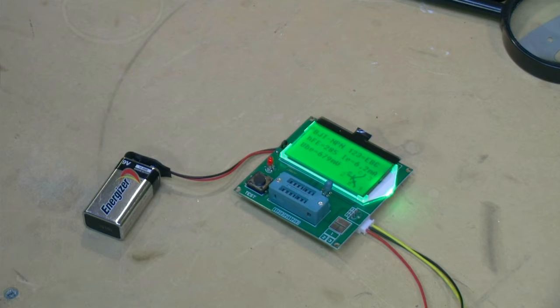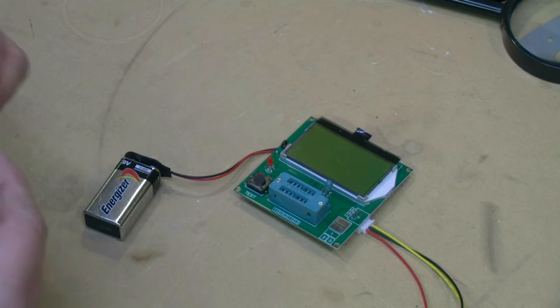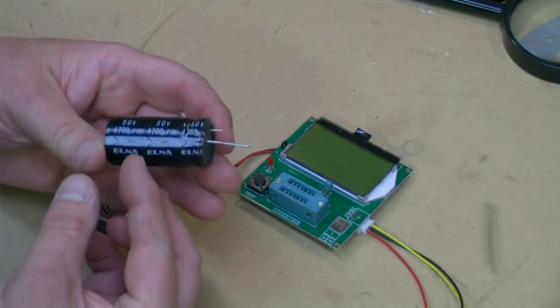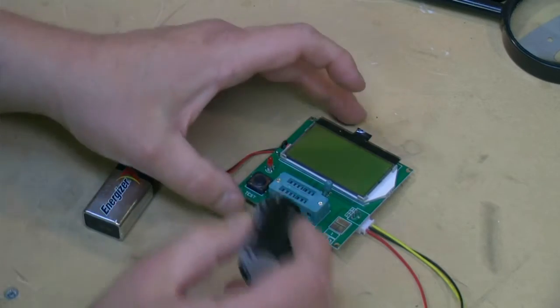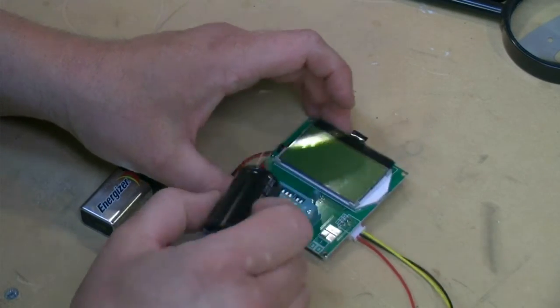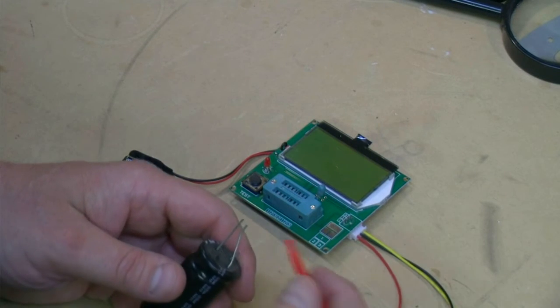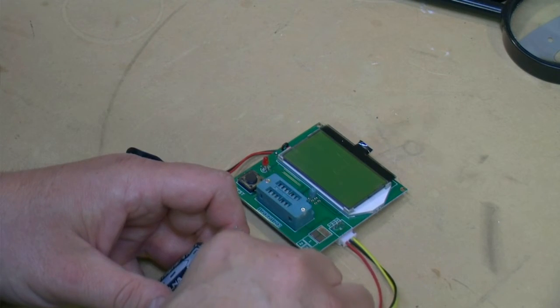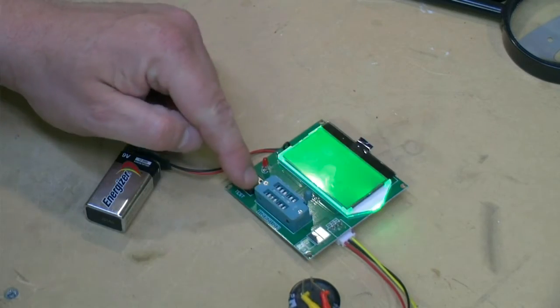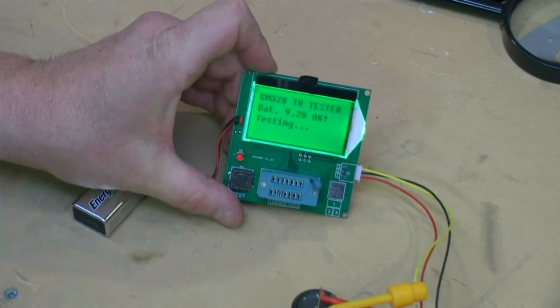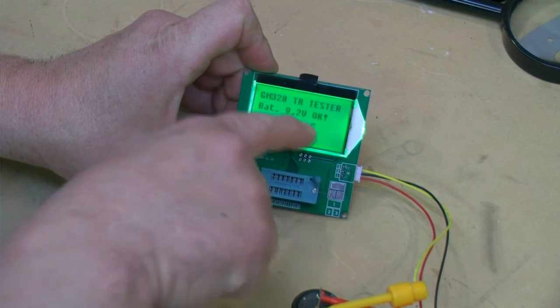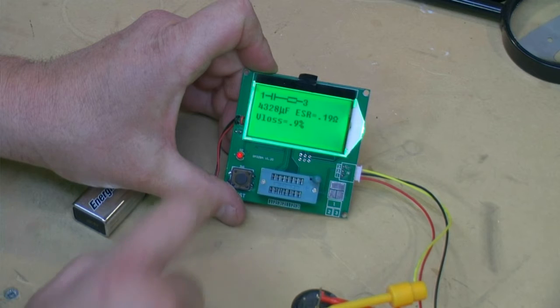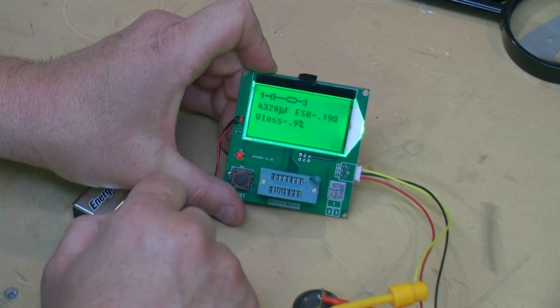So let me just pull something off the bench here. This is a 4700 microfarad, 50 volt cap. It's an old Elna. I've had these for a while but whatever. Let's see if we can get it to measure. Let's turn it on and see what it says. It says capacitor. It tells me it's a 4328 microfarad with an ESR of 1.9 ohms.